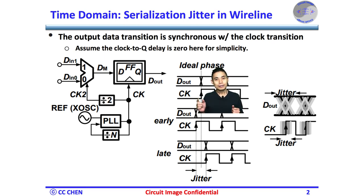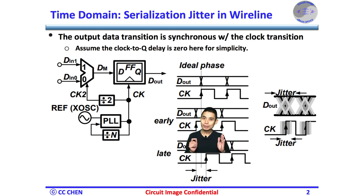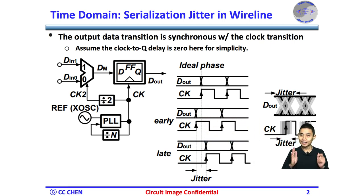But the clock phase might not be static all the time. For example, the clock phase could be sometimes earlier or sometimes later than the ideal phase. In other words, the uncertain phase movement is jitter. Again, the clock's jitter would be directly translated to the output data jitter.